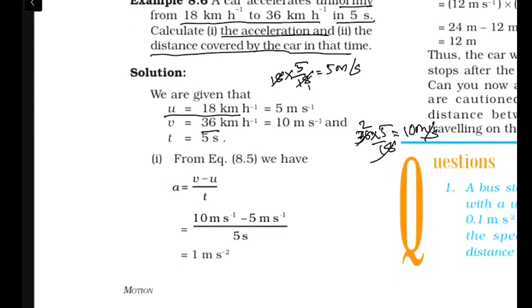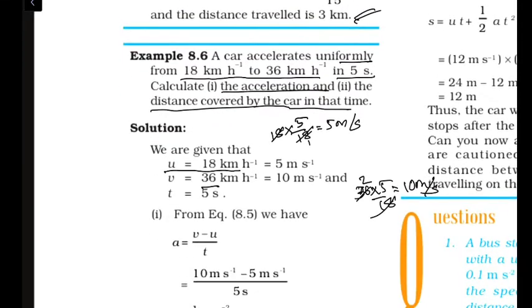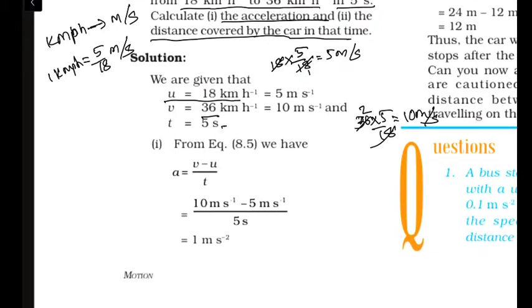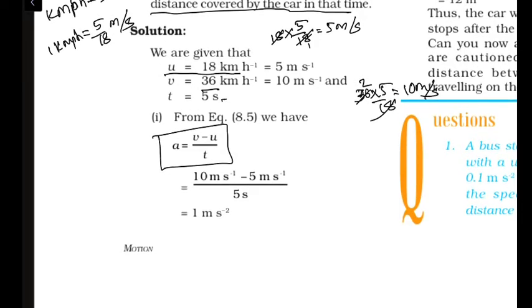The conversion rule: 1 km/h = 5/18 m/s. Time T = 5 seconds. Using A = (V - U)/T = (10 - 5)/5 = 5/5 = 1 m/s².